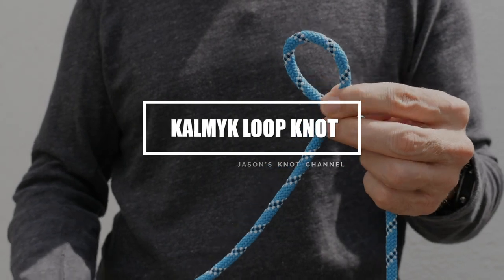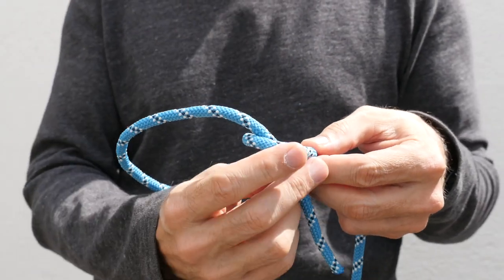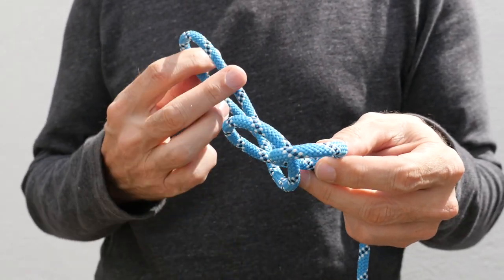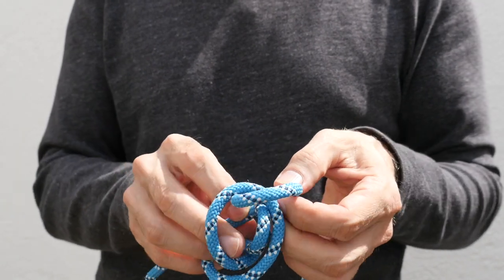So the kalmyk loop is a fixed loop knot that's still largely unused in the West, but it's common in Russia and often used instead of the bowline.